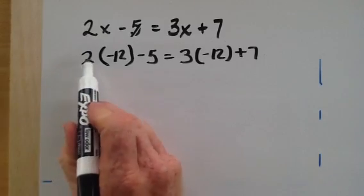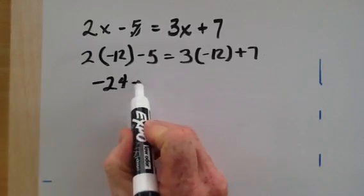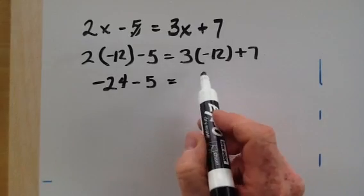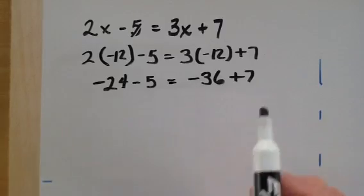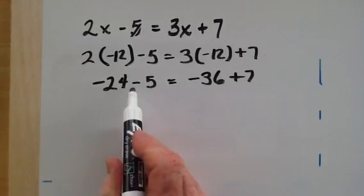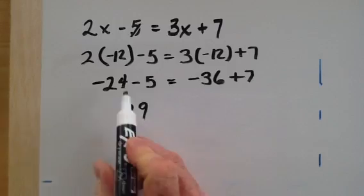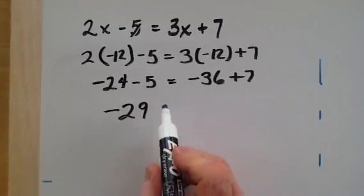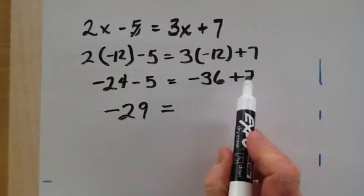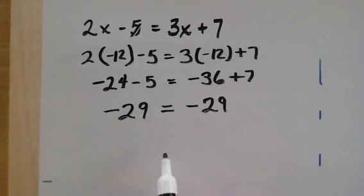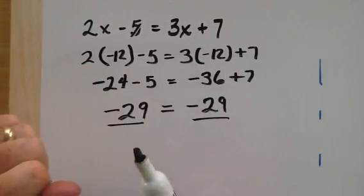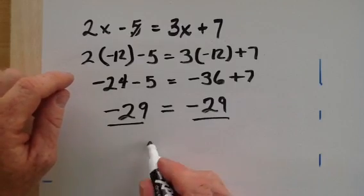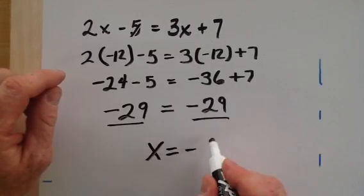So if we verify this, 2 times a negative 12 is a negative 24 minus 5. And 3 times a negative 12 is a minus 36 plus 7. Now, again, sign numbers, both signs are negative, so we are going to add those two together. That's 29, and give them their like sign. That's a negative 29. Here we have different signs, so I'll take the larger minus the smaller, which is 29, and give it the sign of the larger. And you can see that we have minus 29 is equal to a minus 29, which verifies that our value that we found for the variable x, x equaling a negative 12, was our correct solution.